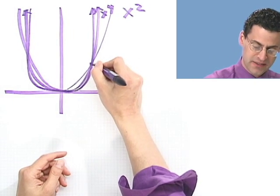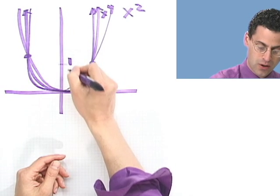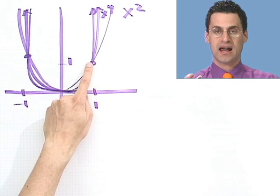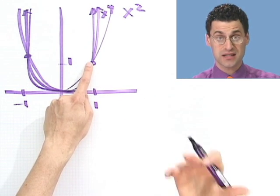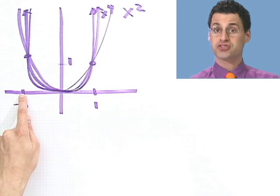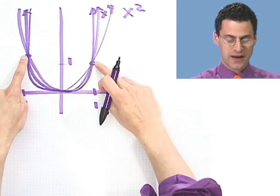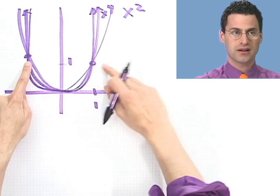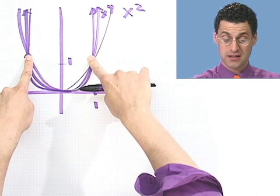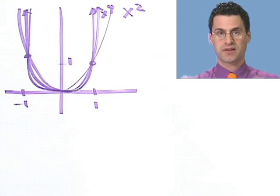Notice that all these even-degree curves contain the same two points: (1, 1) and (-1, 1). Because if you put 1 into x squared, x to the fourth, or x to the sixth, you always get 1. And if you plug in -1 into any of those, you always get 1 again. Those two points are points in common with all of them. The higher the degree, the more dramatic the shape.